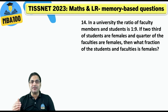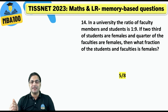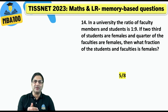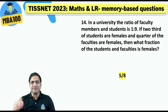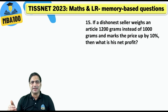In a university, the ratio of faculty members and students is 1 is to 9. The answer was 5 is to 8. Take the number of faculty members as 100 and number of students as 900. The number of female faculty members would be 25 and female students would be 600. So 625 divided by 1000 gives 5 by 8.